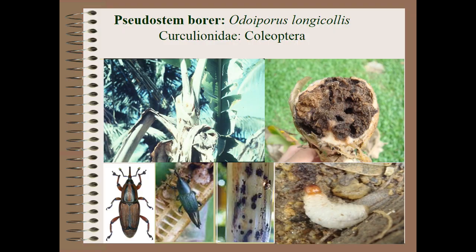The next pest is Pseudostem borer. Both are weevils. Scientific name is Odoiporus longicollis, family Curculionidae, order Coleoptera. The grub makes boreholes and tunnels in the pseudostem and causes wilting of the plants.